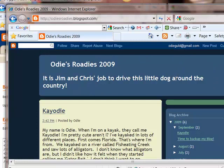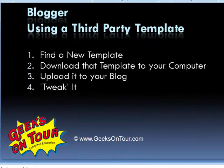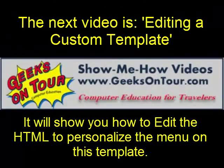So now you'll need to edit your page elements to get that picture back if you want. And that is Blogger using a third-party template. You can find one — there are hundreds, maybe even thousands of them out there. Download it to your computer, upload it to your blog, and then tweak it. In the next video, we will continue tweaking this same template and you'll see how to edit the HTML and customize the menu.